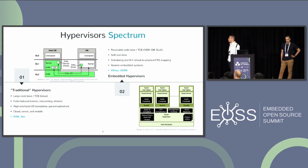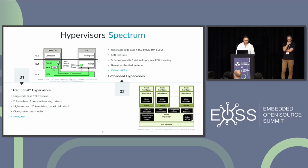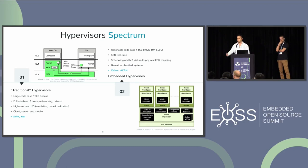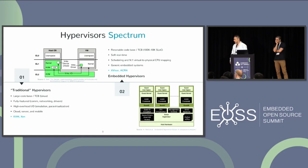Looking at the hypervisor spectrum: on the completely left side, you have traditional server- and cloud-oriented hypervisors with a large code base. Most depend on Linux as part of the trusted computing base. They are fully featured but provide high I/O overhead due to emulation or paravirtualization. Prominent open-source examples are KVM and Xen in vanilla form.